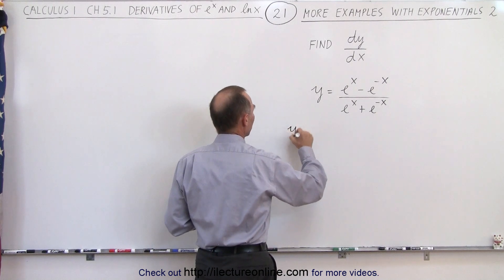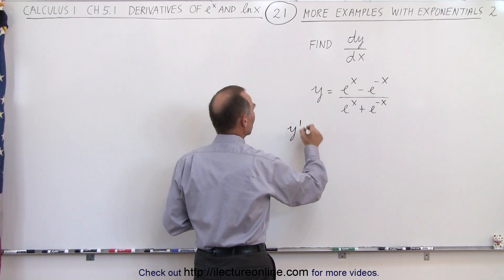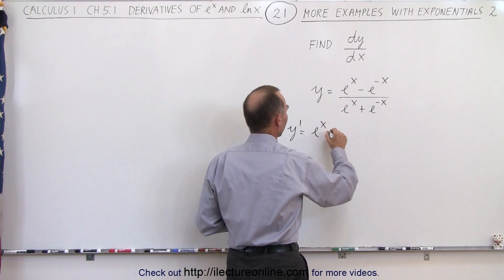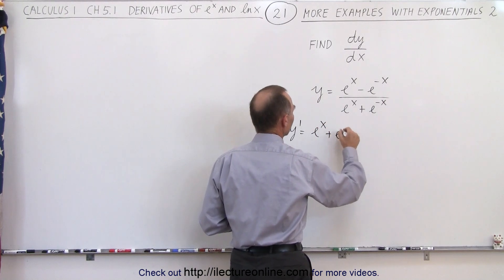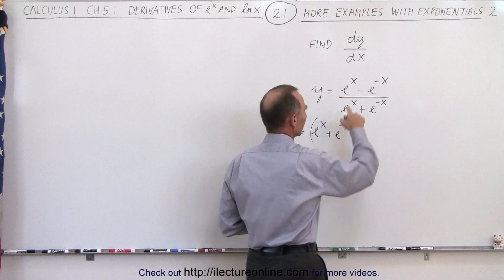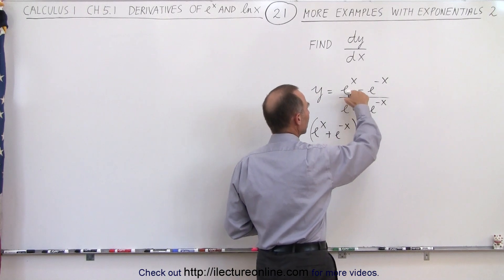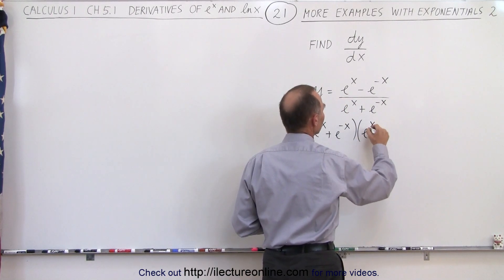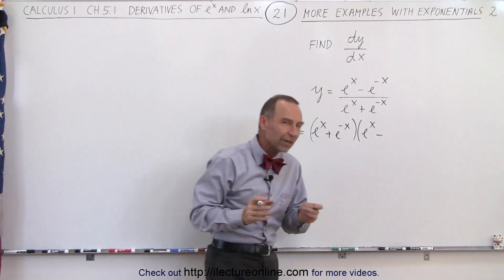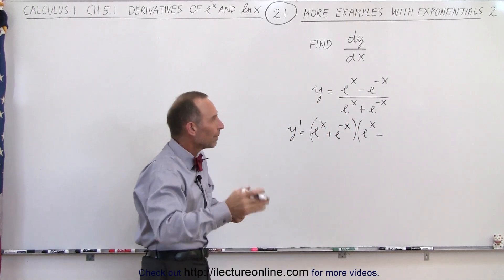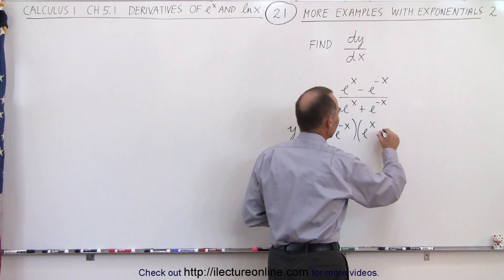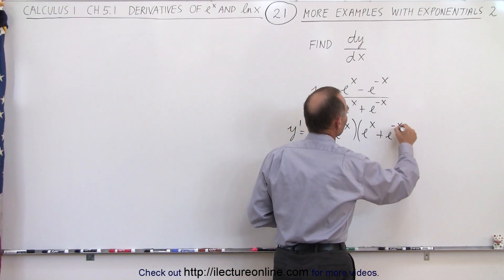So we can say that y prime, which is dy/dx, is equal to the denominator (eˣ + e⁻ˣ) times the derivative of the numerator. The derivative of eˣ is eˣ, minus the derivative of e⁻ˣ which is -e⁻ˣ, so that minus becomes a positive e⁻ˣ.